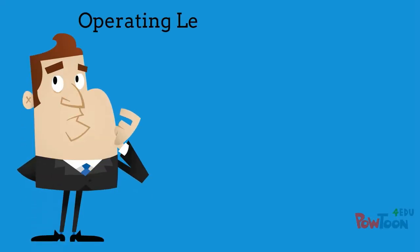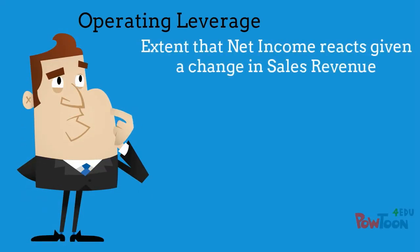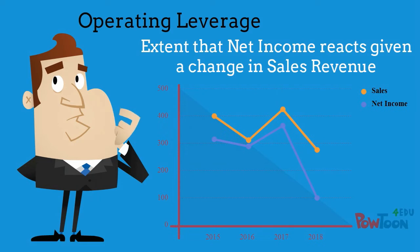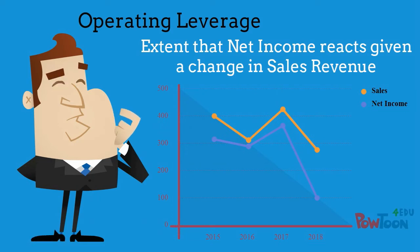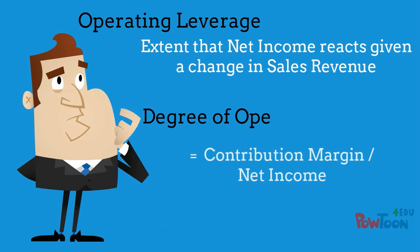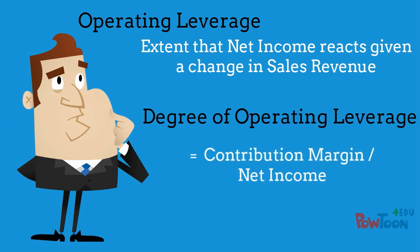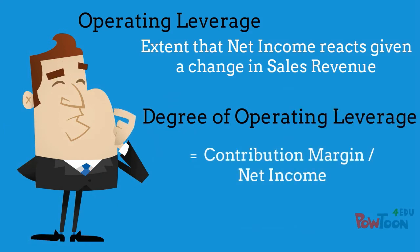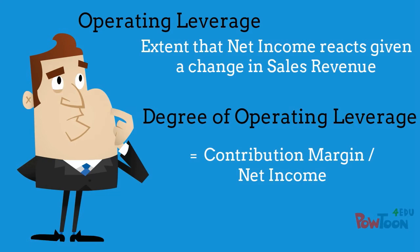Operating leverage is the extent that net income reacts to changes in sales levels. The degree of operating leverage is a measurement of that reaction. We calculate it by dividing the contribution margin by net income.